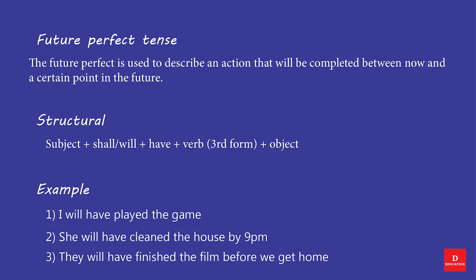Future Continuous Tense is used to describe an action that will be completed between now and a certain point in the future. Structure: Subject + shall/will + have + Verb (third form) + Object. Examples: I will have played the game. She will have cleaned the house by 9 p.m. They will have finished the film before we get home.